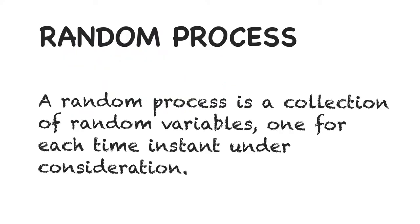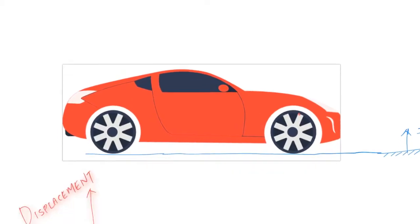Now, what is a random process? Before I get into examples, let me give you the formal definition. A random process is a collection of random variables, one for each time instant under consideration. This is the formal definition. We already know what a random variable is, so a random process is basically a collection of random variables.